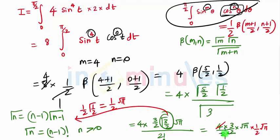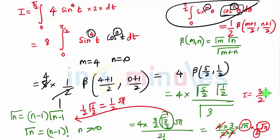So we get 4 and the 2s cancel, giving us I equal to 3/2 times √π times √π. Since √π·√π = π, our final answer is 3π/2. This is how we solve a problem on Beta function Type 3. More such problems we will see in our next video, so stay tuned for future lectures.